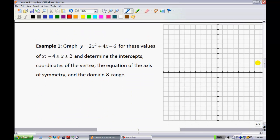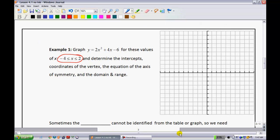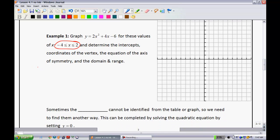So specifically today, what we're going to be concentrating on is looking at a graph or graphing an equation and seeing what characteristics we can pull out from it. So this is graph y equals 2x squared plus 4x minus 6 for these values of x. So they're saying that x is between negative 4 and 2 and determine the intercepts. So they want the x and y intercepts, the coordinates of the vertex, the equation of the axis of symmetry, and the domain and range. So what I'm going to do for you here is we're going to start by making a table of values to find out this information.